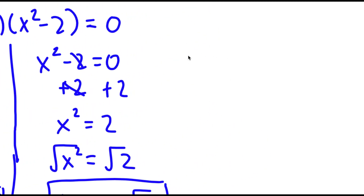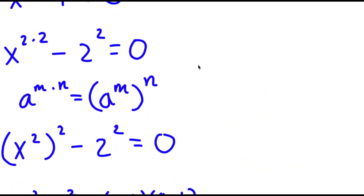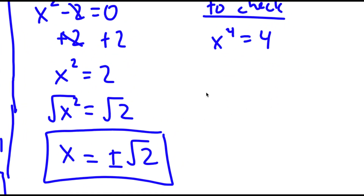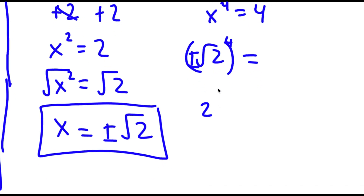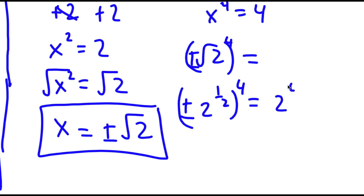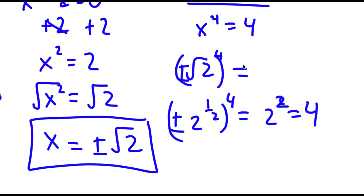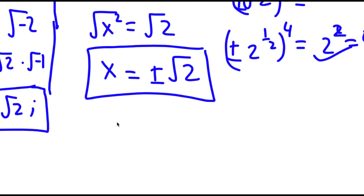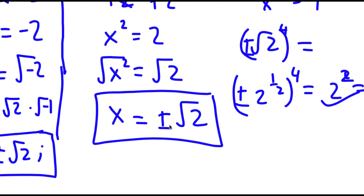So now I'm going to check. My original equation was x to the power of 4 is equal to 4. The square root of 2 to the power of 4 — because this is an even exponent, it doesn't matter if it is positive or negative, it's going to be the same result. The square root of 2 is the same thing as 2 to the power of 1 half, so I have 2 to the power of 1 half to the power of 4, which equals 2 to the power of 2, which equals 4. So this works, and for the square root of 2i it's exactly the same. So my four solutions are correct.